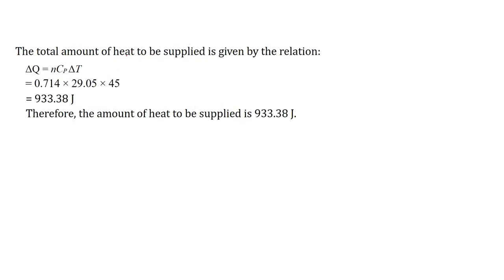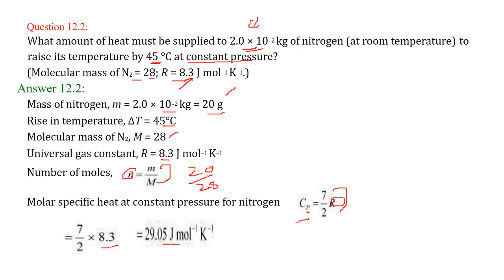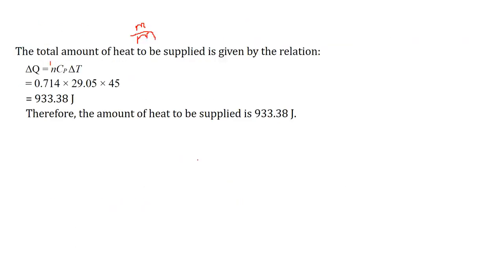Now, the total amount of heat which is supplied — heat to be supplied — the relation will be delta Q equal to N Cp delta T. This N is small m by capital M, we just wrote that. So putting this value, N comes around 0.714. Cp we just found out is 29.05 and delta T is of course given as 45. The final value — the amount of heat to be supplied — is 933.38 joules.